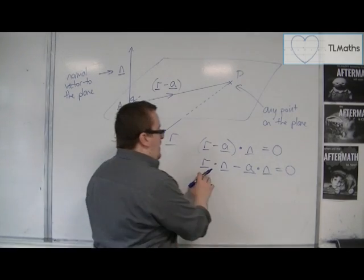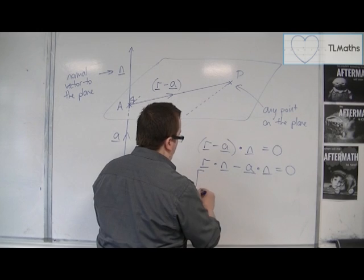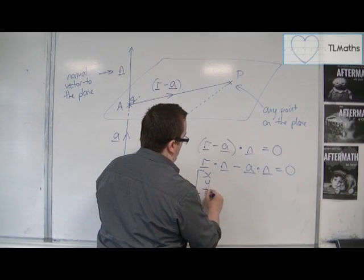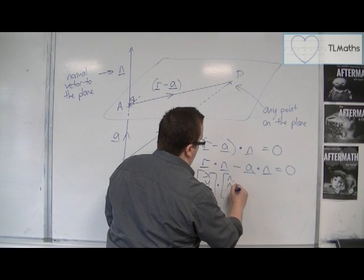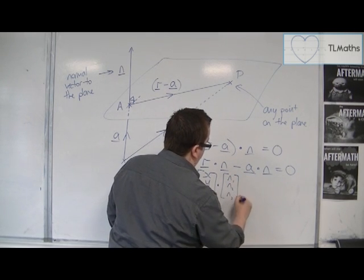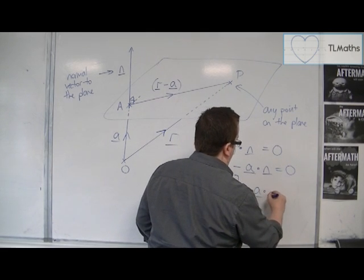So, now if we think about what R is equal to, that's X, Y, Z. And N, well, we could write N as N1, N2, N3. And we're going to leave this minus A dot N alone.